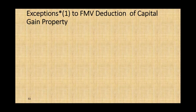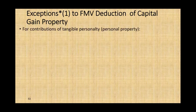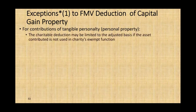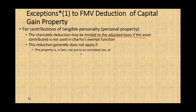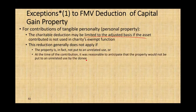Exception number one to the fair market value deduction for capital gain property involves tangible personal property — not real property like land or buildings. Your contribution may be limited to the adjusted basis if the asset contributed is not used in the charity's exempt function. If you donated something to a charity but the charity cannot use it — they usually sell it — then you're going to be limited to your adjusted basis. This reduction generally does not apply if the property is put to an unrelated use, or if at the time of the contribution it was reasonable to anticipate that the property would not be put to an unrelated use.